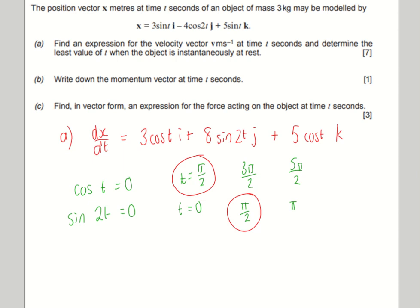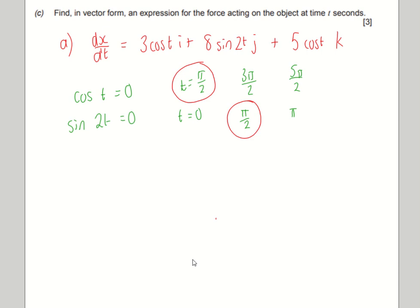So for part b then, we've got to find the momentum. Momentum is mass times velocity, so it's just multiplying everything through by the mass, which was 3. So momentum equals mv. V is a vector, m is just 3. So you get 9 cos t in the i direction. You get plus 24 sine 2t in the j direction. I'm going to squeeze it in here openly. 15 cos t in the k direction. So that's nice and straightforward.